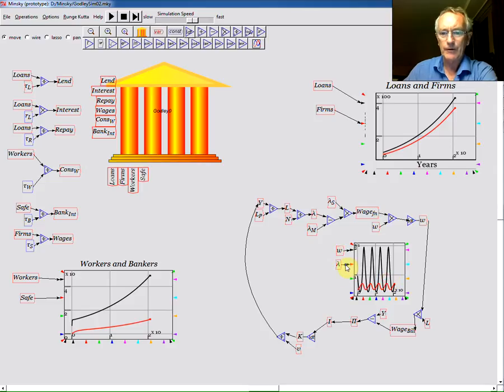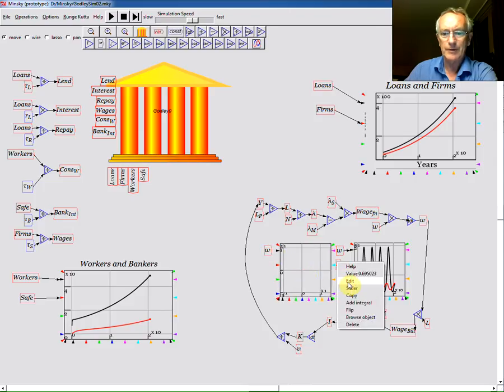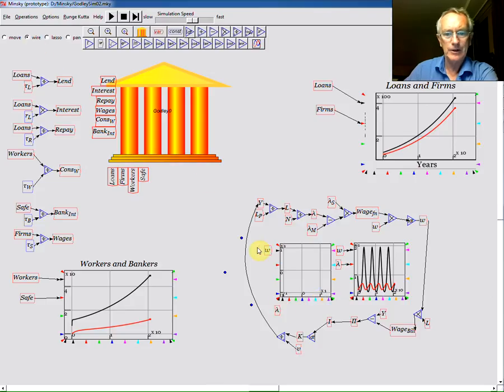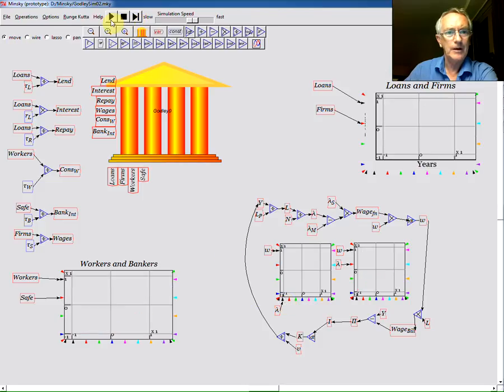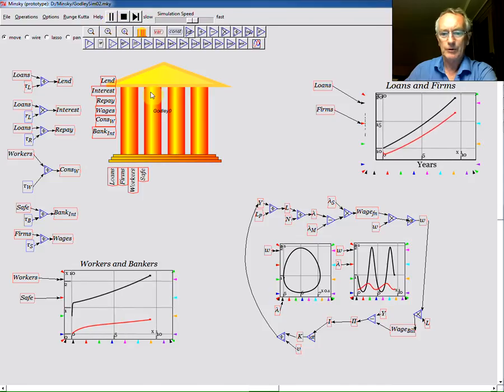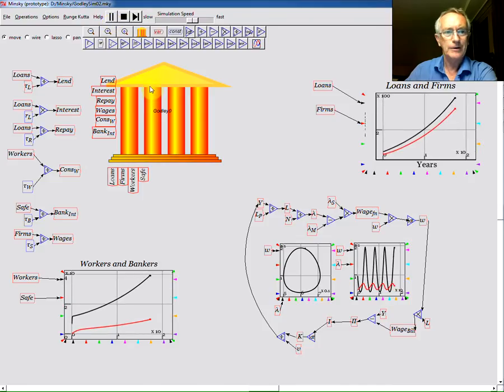Notice I've got a graph of the wage rate and the employment against time. It's also useful to be able to graph one variable against another. So if I now take a copy of W here and a copy of lambda here and wire those to the same colored input on the axes, go back to the beginning and simulate, and you see the closed loop of the Goodwin model simulating over time.